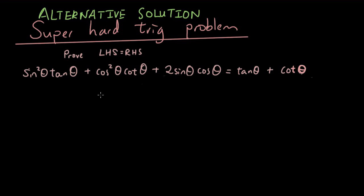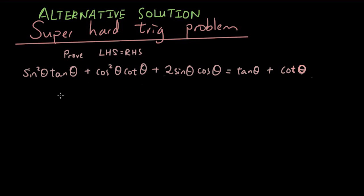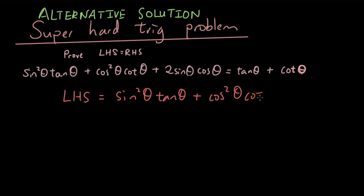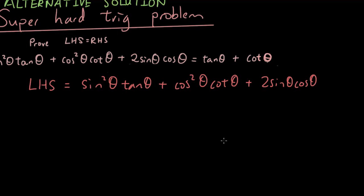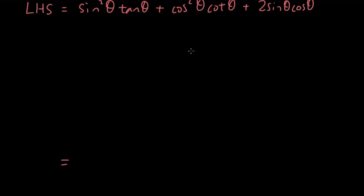The way you would prove all of these trigonometric equations is you want to get what is on the left hand side, or you could get what is on the right hand side and prove that it's equal to the other side. So we want to show that the left hand side, which equals all of this stuff, ends up becoming tangent theta plus cotangent theta at the bottom.